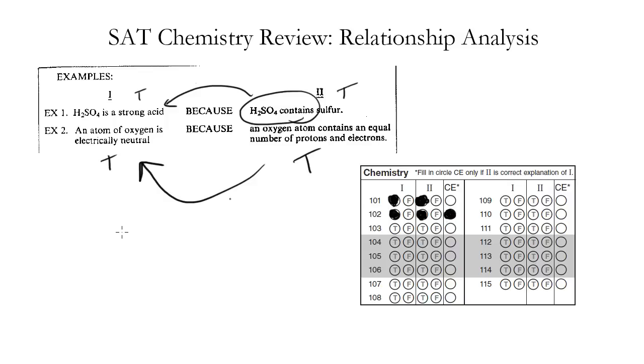Now you only have to bubble in or even think about correct explanation if it's both true and true. If you have true, false, false, true, or false, false, you don't even have to consider the CE. It's only when you've got true, true that you actually have to consider it.